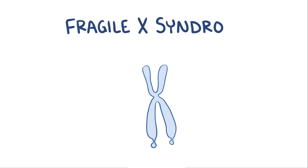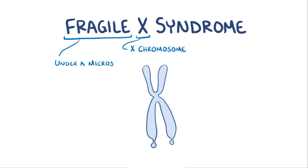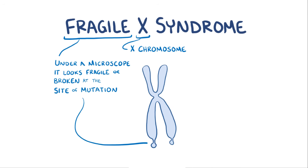With Fragile X syndrome, sometimes just called Fragile X, the X refers to the X chromosome where the disease gene is located. The fragile refers to the fact that under a microscope the X chromosome looks fragile or broken at the site of the mutation. That's because the chromatin which makes up the chromosome gets really condensed at that point.